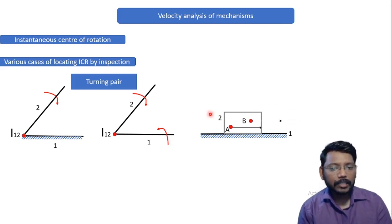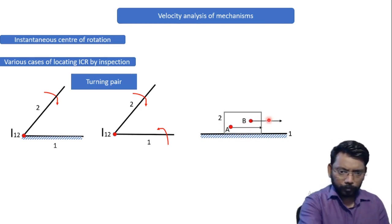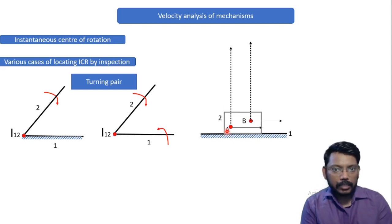Now to locate the ICR between link number two and link number one, all you need to do is draw a perpendicular to the direction in which the sliding is happening. So sliding is happening in the right direction. So all we need to do is draw a perpendicular to this particular point.